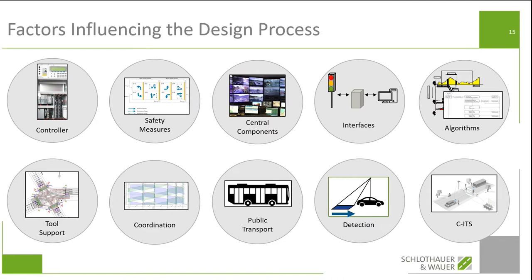Coordination can be a factor: do I have coordinated corridors that influence how I can plan individual intersections? Do I have to deal with public transport — do I want to prioritize it? What kind of detection am I using? And then another chapter, CITS functions. Although they still seem like a thing of the future, we're already in the period of first implementations and pilot projects of CITS solutions. We should have in mind that solutions not possible yet will be standard in five years — and we don't want to be in a place where we can't implement them because we didn't have them in mind when we designed our systems.